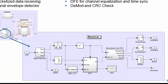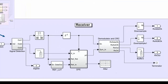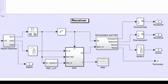Now we introduce the receiver modeling. It consists of the signal detector, the decision feedback equalizer, and the demodulator with cyclic redundancy checks. This receiver provides the functions of signal detection, channel equalization, symbol synchronization, and header and payload CRCs. Also, this receiver can compensate for certain carrier frequency offset. This block sends out the status of the received frame to the MAC layer and the bitstream of the received data.